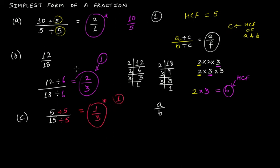So if you are asked to write any fraction in its simplest form, find the highest common factor of numerator and denominator, then divide both numerator and denominator by that HCF. The resultant fraction will be the simplest form of the given fraction.